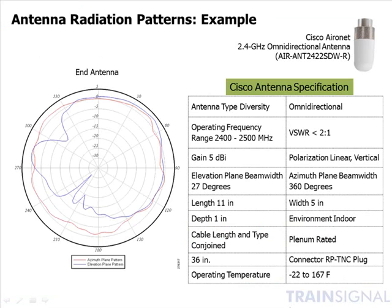Let's take a look at an antenna specification. This is a Cisco antenna, and up here at the top you can see the product description and number. Coming down to the specification columns, you can see the antenna type is diversity, meaning it has multiple antennas receiving the signal. Over here we can see that this is an omnidirectional antenna. Coming down further, we can see this antenna is operating in the 2400 to 2500 megahertz band — the 2.4 gigahertz band.